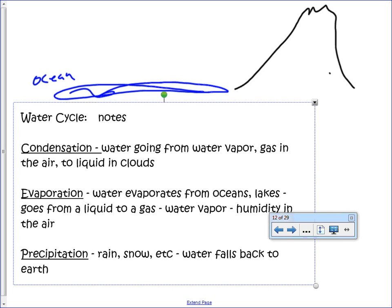And so starting right here, evaporation is going to be water going from a liquid to a gas. Pretty simple. Water evaporates from the oceans, lakes, goes from a liquid to a gas, turns into water vapor which is humidity in the air. One of the questions that you were supposed to answer yesterday was something like how does water get into the atmosphere, and many people answered it very simply and just said evaporation.